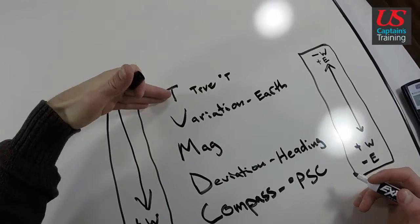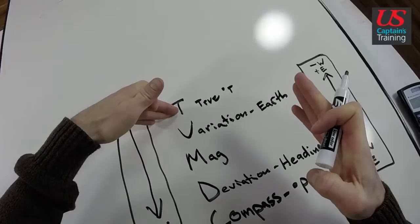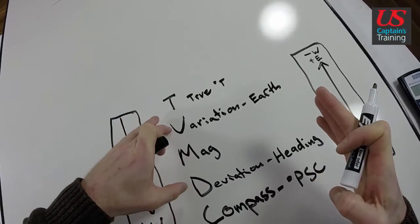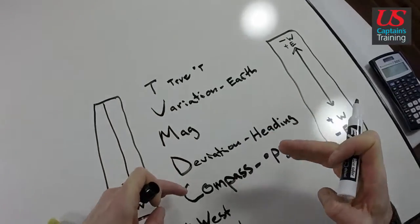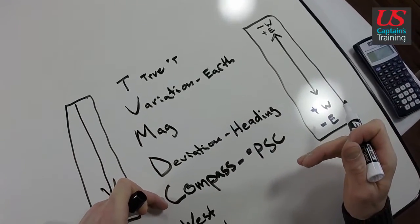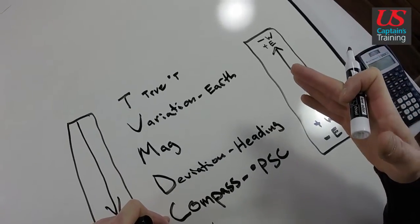We take true degrees. Geographic true. True north. And then we put variation and deviation in to get what our compass should read at that spot on the planet at that heading for our particular ship.